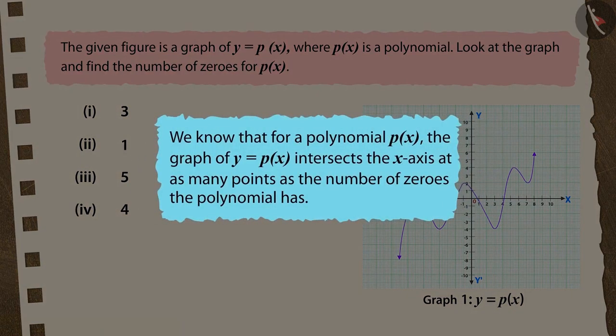We know that for a polynomial px, the graph of y equals px intersects the x-axis at as many points as the number of zeros the polynomial has.